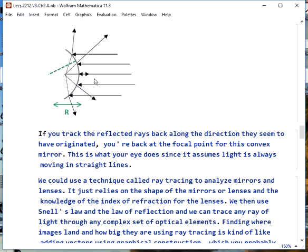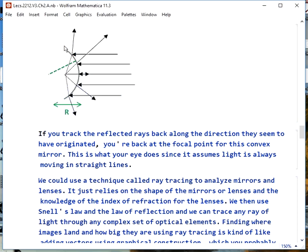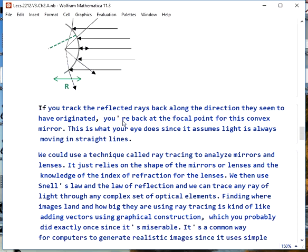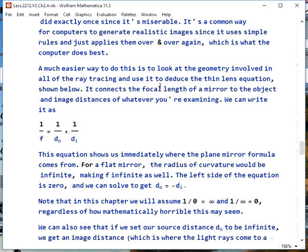We could figure all this out using ray tracing. All this does, we use Snell's Law and the Law of Reflection, and we can go through any number of lenses or mirrors and trace these light rays and see where they're going. And this is a miserable way to find out what your image is going to look like. It's an easy way to get a computer to understand it because it's simple and tedious, and you just apply it over and over and over again. What's a lot easier to do is look at the geometry and then figure out the thin lens equation. This is done in your book. This is one of really only two equations we're going to need.